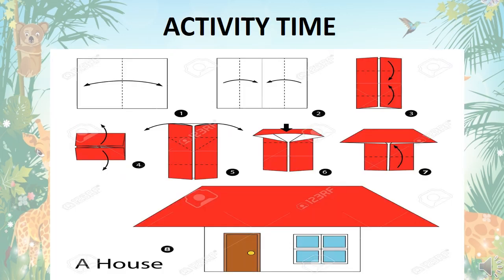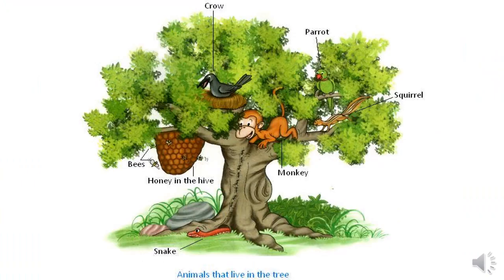My dear students, are you full of energy? That's great! So let us begin today's lesson with some fun activity. You have to take one origami sheet and follow the steps as given in the screen. When you reach step number 8, you will be having a small paper house. After making the house, write with the sketch pen 'My Home' on the top of it. Children, you must be wondering why we did the origami house activity today. We did that because today we are going to learn about animals and their home.